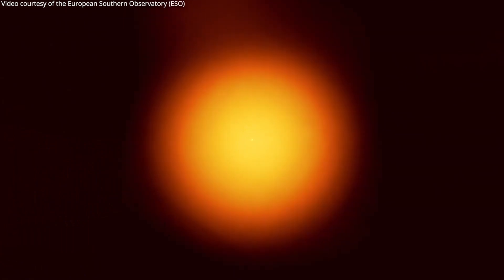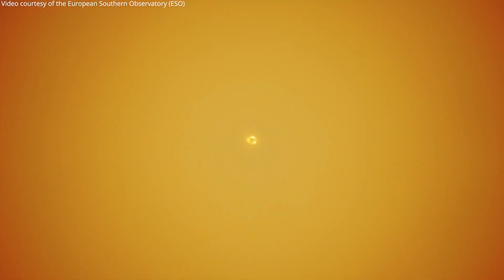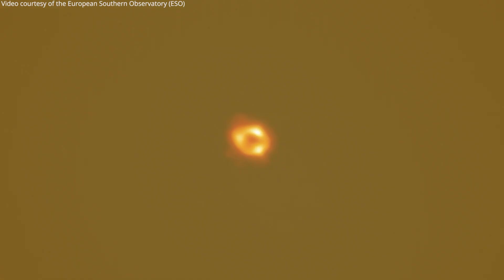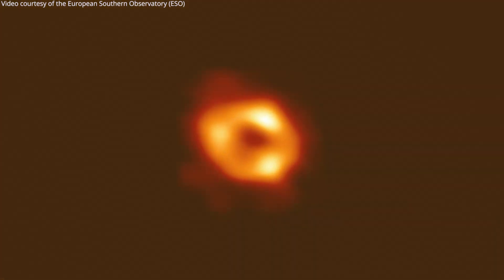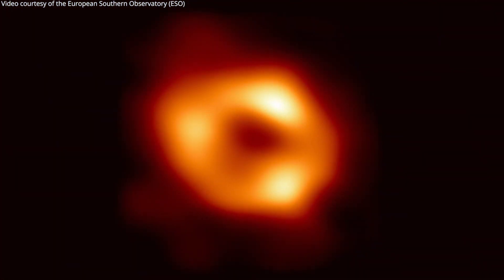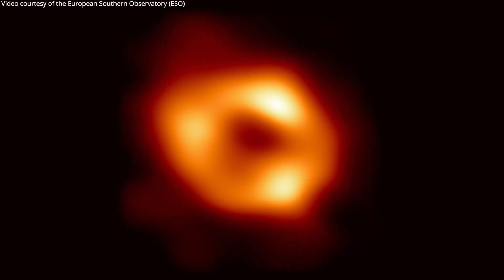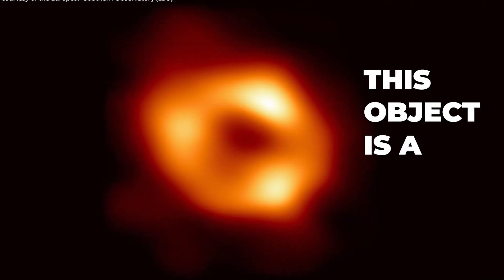For decades, we have known about a compact object that is at the heart of our galaxy that is 4 million times more massive than our sun. Today, right this moment, we have direct evidence that this object is a black hole.